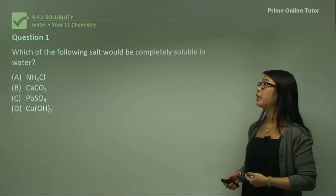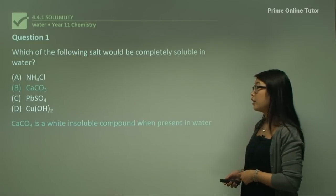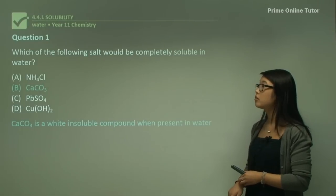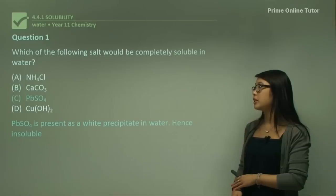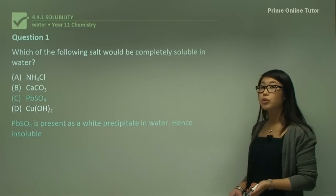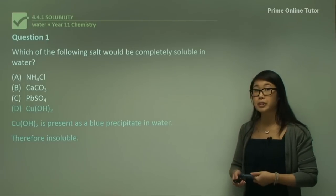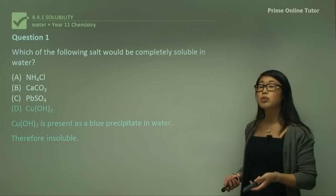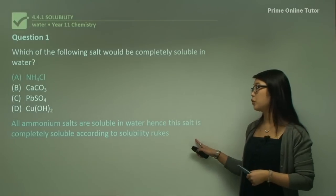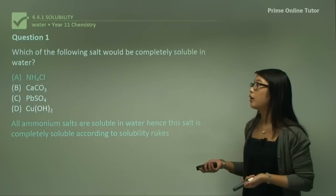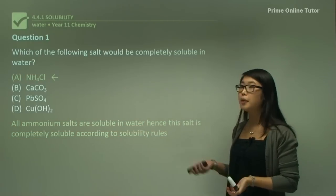Question one: which of the following salts would be completely soluble in water? CaCO₃ forms a white insoluble compound in water, so it's incorrect. Lead sulfate is present as a white precipitate in water, so it's also not soluble. Copper hydroxide is present as a blue precipitate and is insoluble. Ammonium salts are always soluble in water because of the like-dissolves-like solubility rule — ammonium salts form a polar interaction with water, so that is the correct answer.